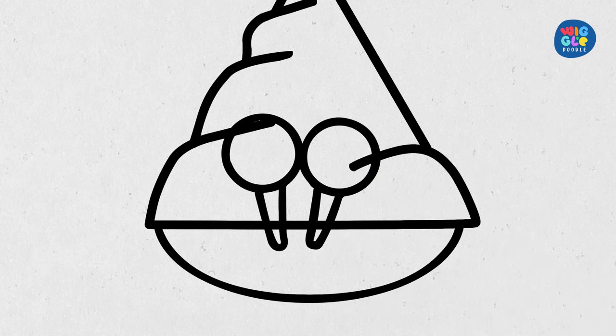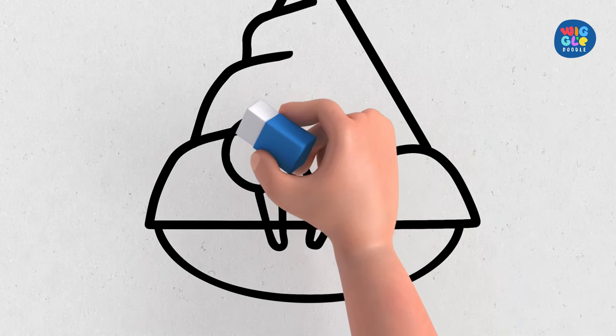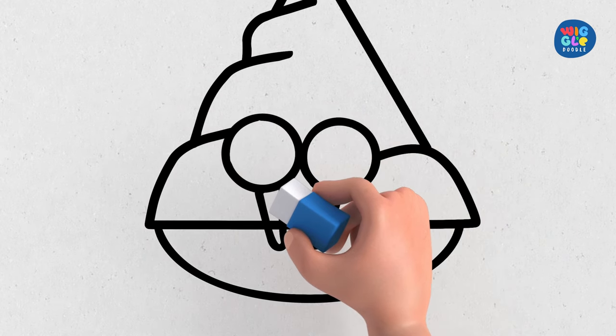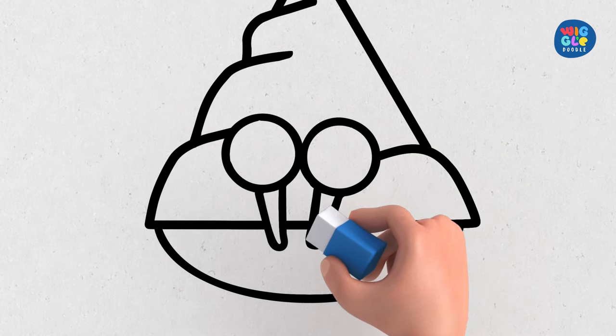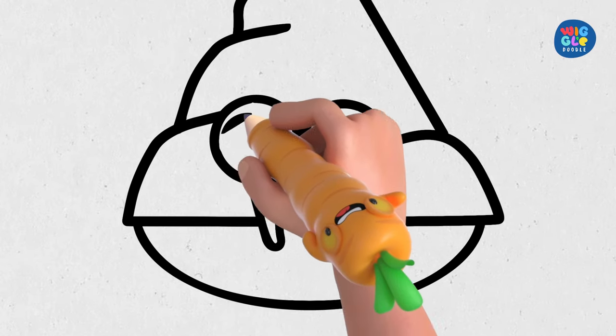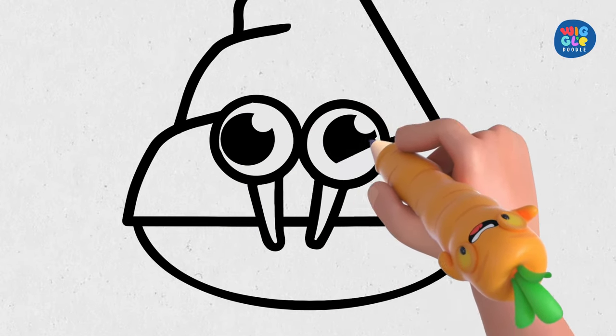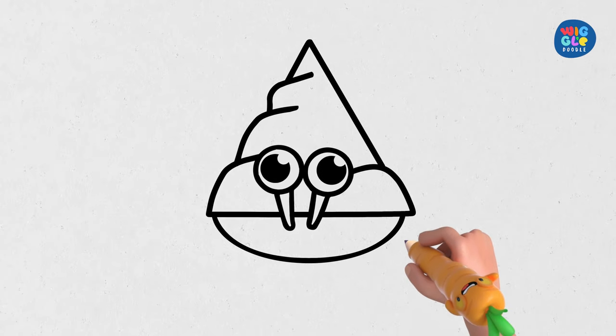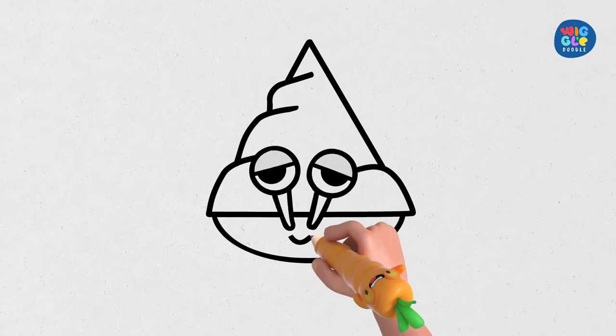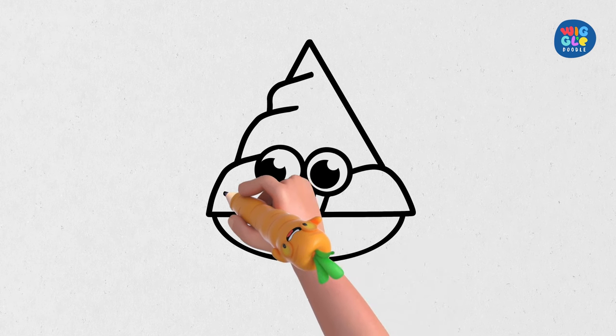Erase any extra lines. Add smaller circles for its pupils. A half circle for its mouth. Draw two curved lines for its antennas.